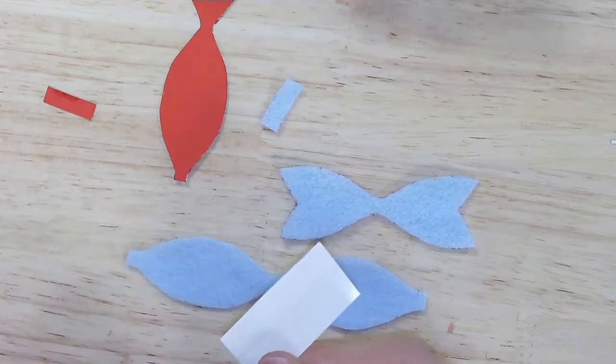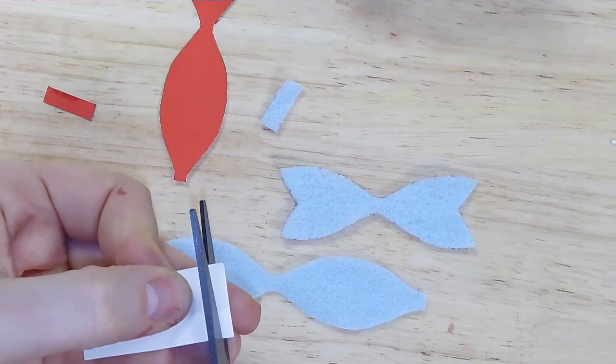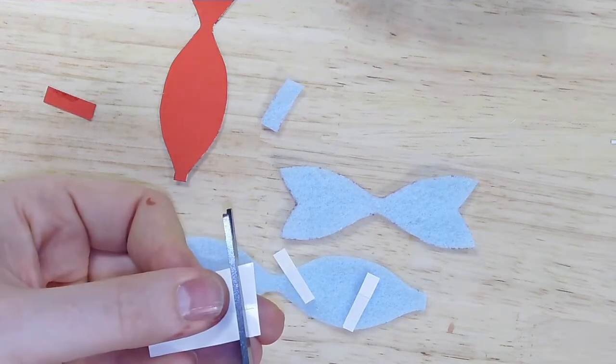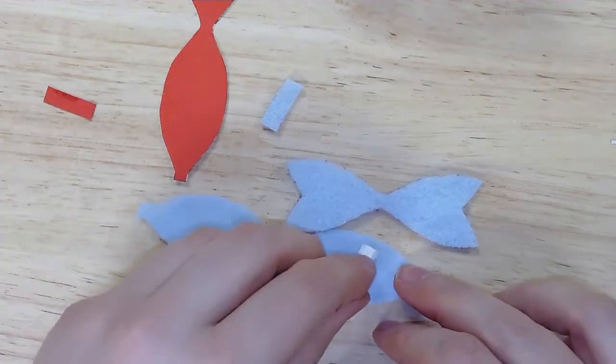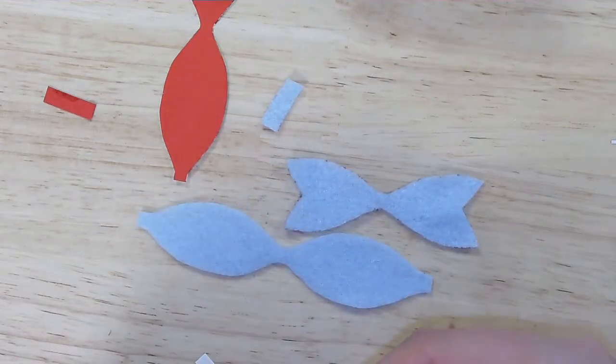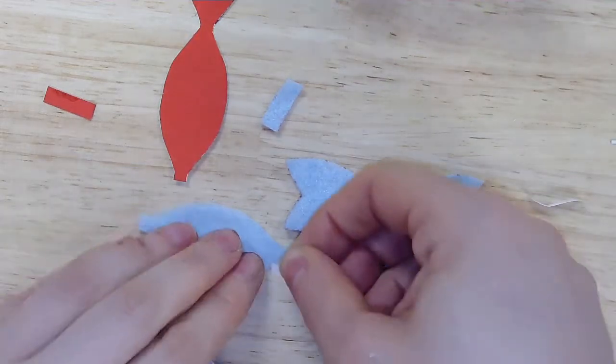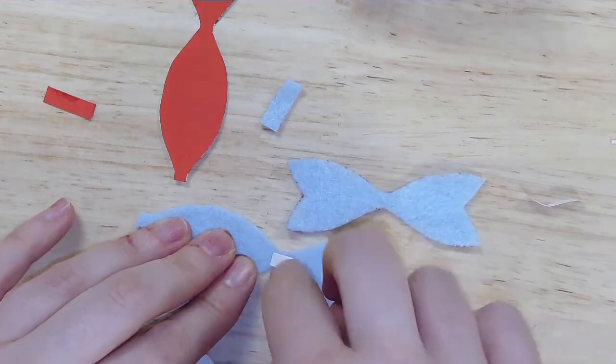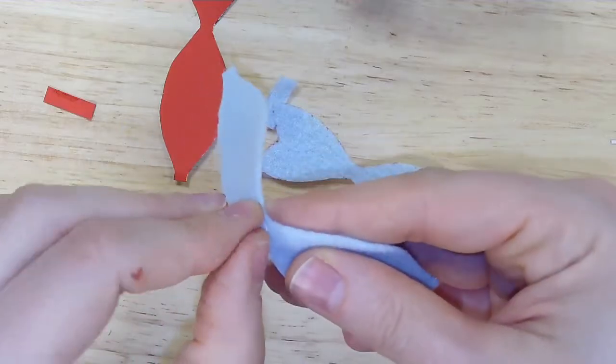Once you have all the felt pieces ready, then you're going to need some very small pieces of fusion tape. As you can see, I cut little tiny squares here. So first you want to take the largest piece of felt and put a little piece of fusion tape right in the center. And then you're going to be folding over the farthest points on each side to make the bow part of the bow. So you pull that over and stick it down.